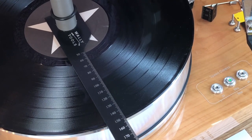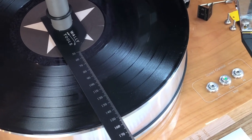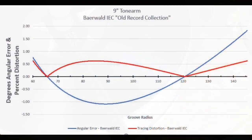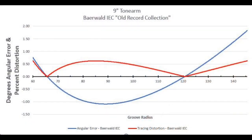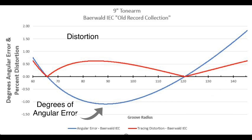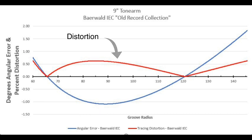This is where Baerwald, Lofgren, Stevenson, and one or two other alignment patterns will vary from each other. Here's a graph of the Baerwald trace of a nine-inch tonearm. The central horizontal axis is the distance in millimeters from the center of the record. The blue line is the degree of angular error and the red line is the distortion percentage caused by the angular error.